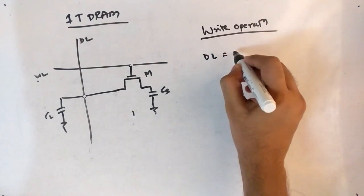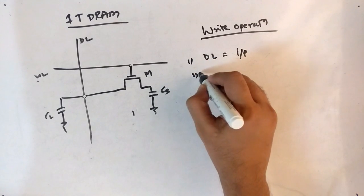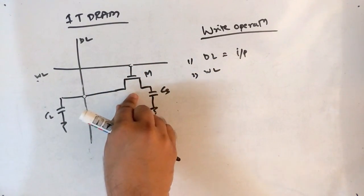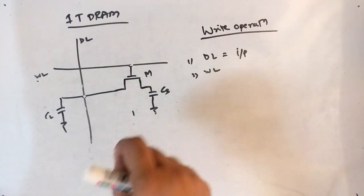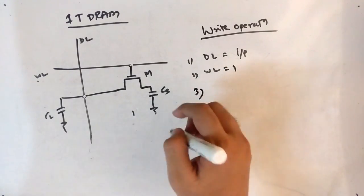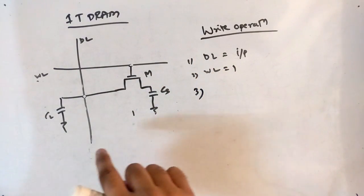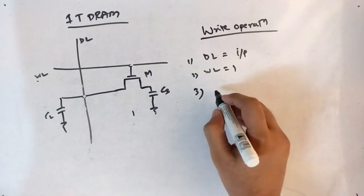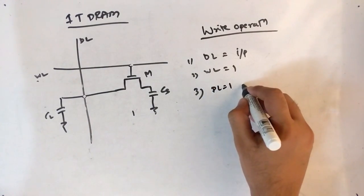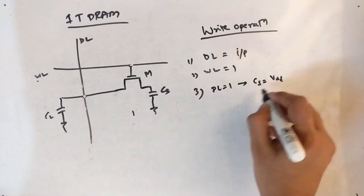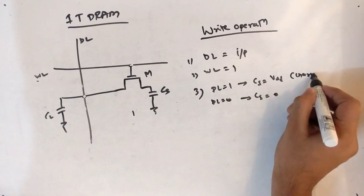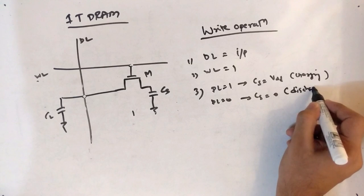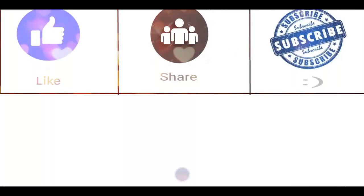The data line acts as the input line, and the word line must be set to 1 to access the transistor and thereby access the capacitor CS. With word line at 1, if the data line is 1, the capacitor charges to VDD; if the data line is 0, the capacitor discharges to 0. This is simply charging and discharging.